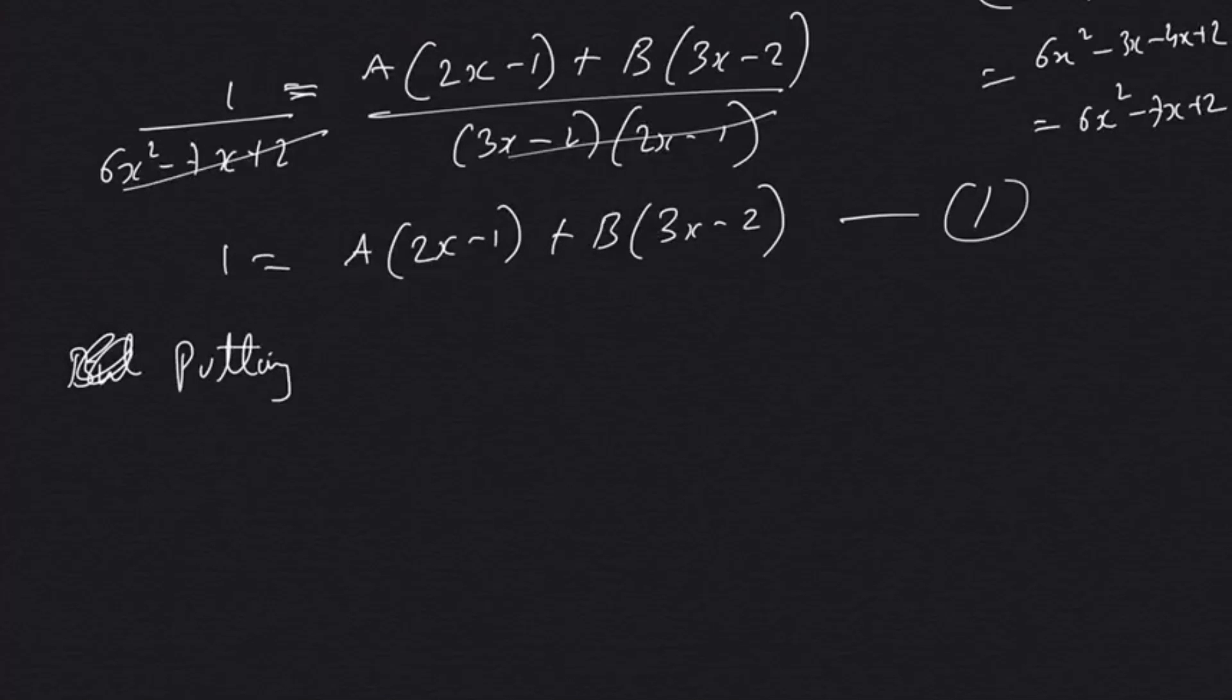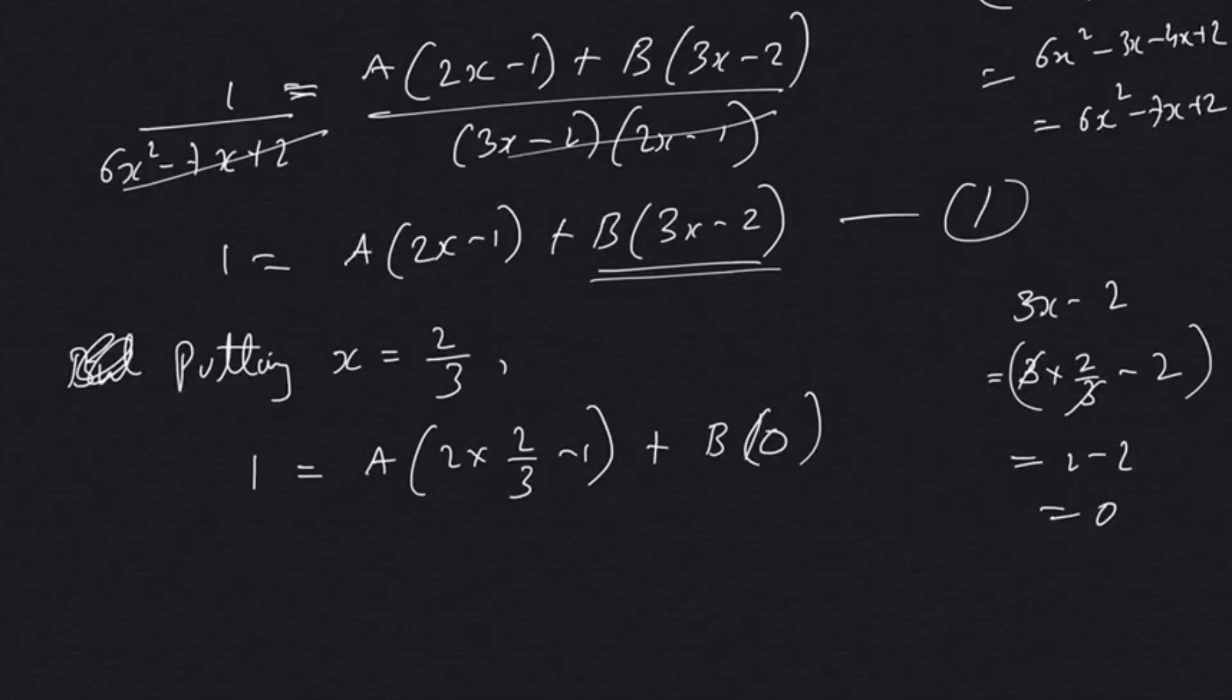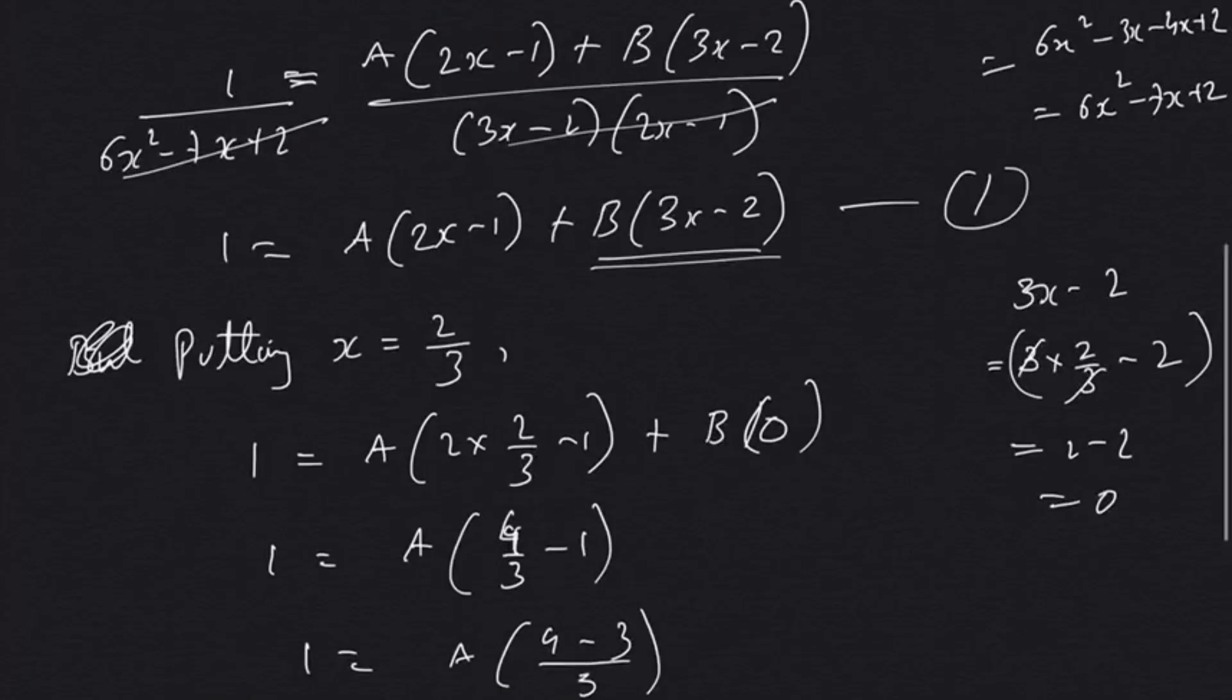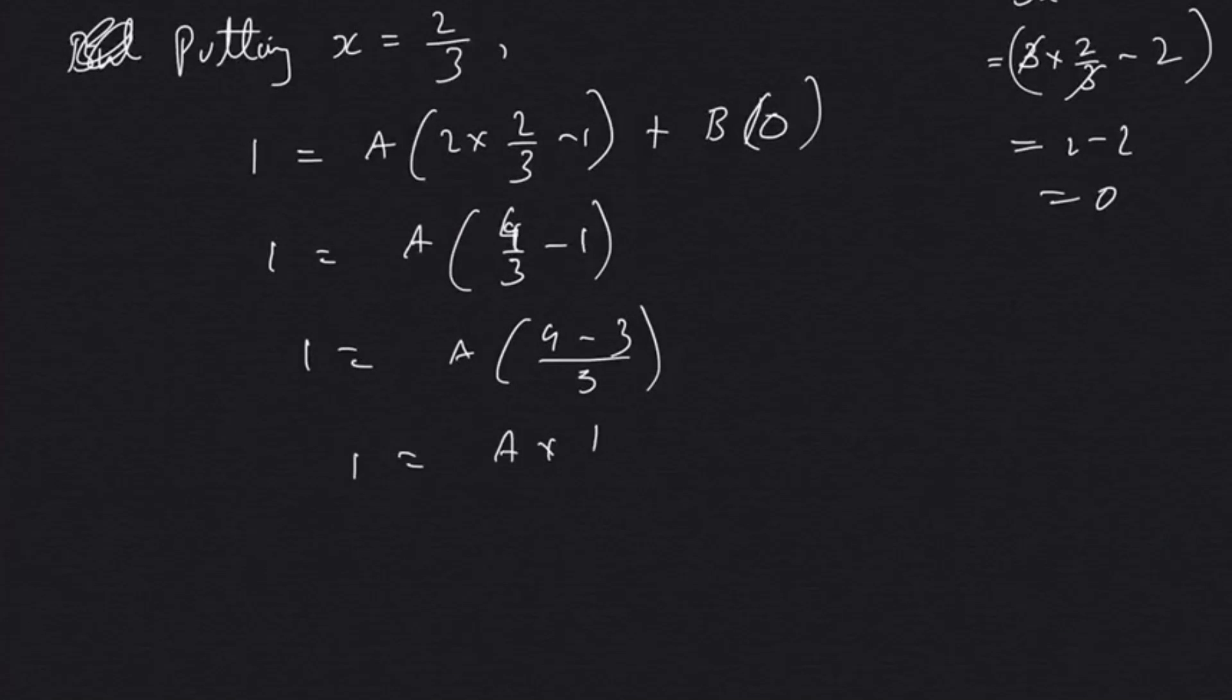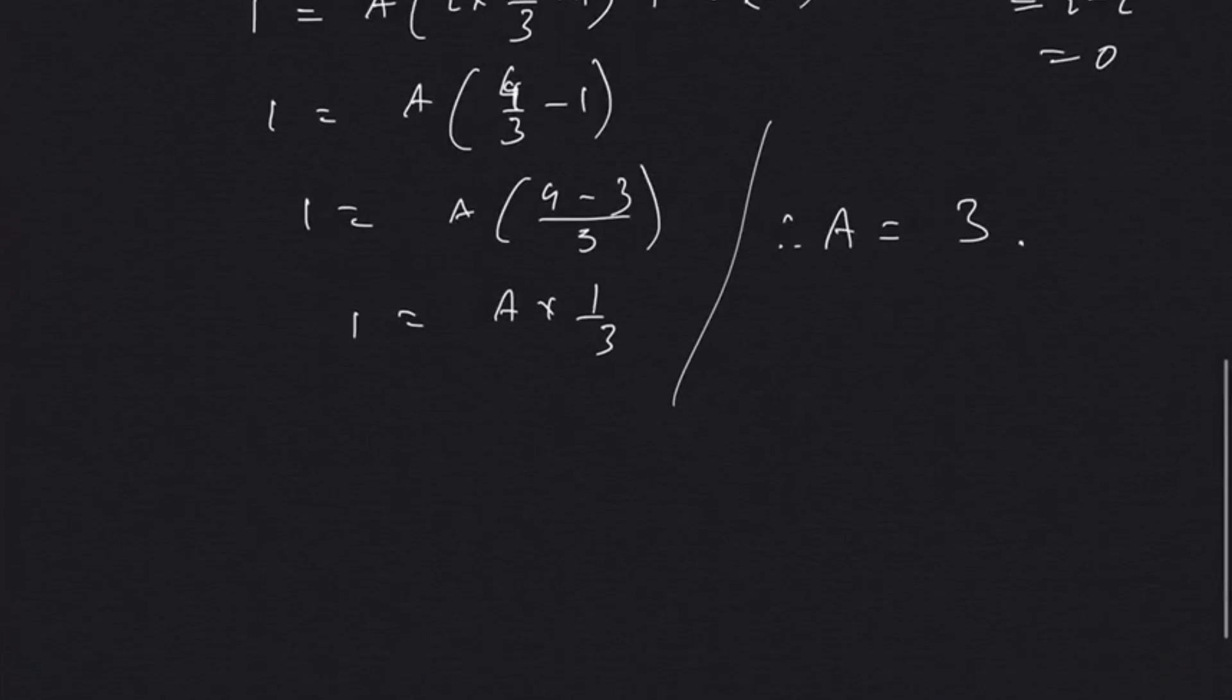In this kind of questions, what we can do is: putting x equal to the value that makes a term zero. Like 3x - 2, if x equals 2/3, then 3 cancels, we get 2 - 2 which is 0. So I'll put x as 2/3 in this equation. That'll be 1 = A(4/3 - 1), so 1 = A(1/3). Therefore A equals 3.